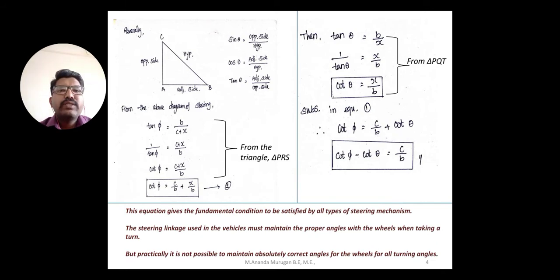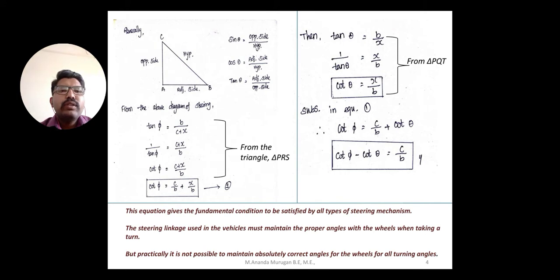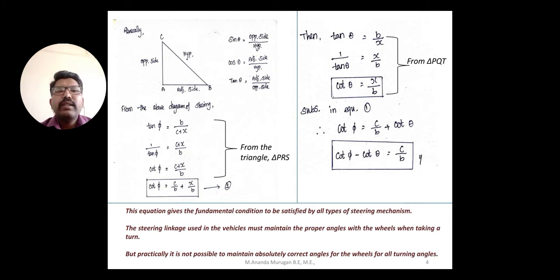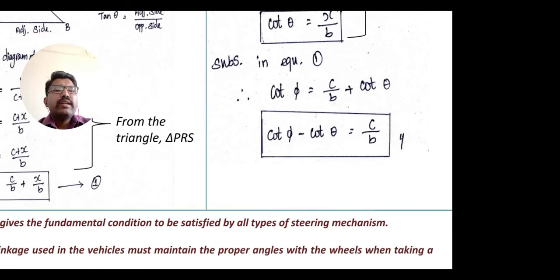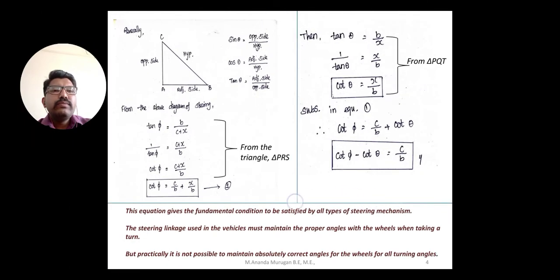This is the fundamental equation or fundamental condition that all steering mechanisms must satisfy — whether it is Ackerman or Davis steering mechanism. The steering linkage has to turn the vehicle at proper angles according to the mechanism. However, in practical conditions this equation will not be satisfied at all times, so this remains a theoretical steering angle.